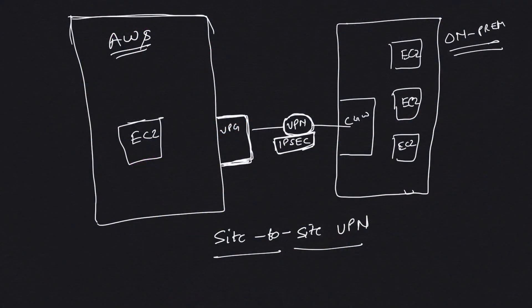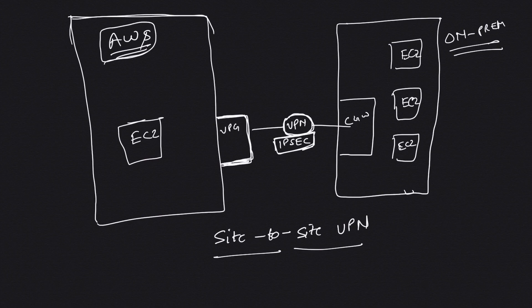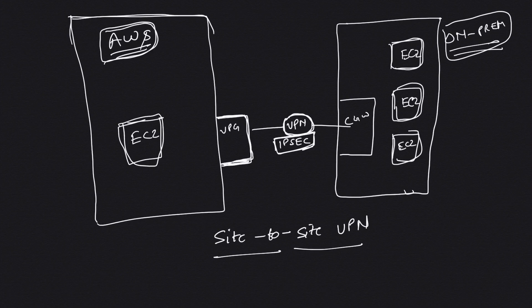Hey guys, welcome back to the channel. In this video we are going to configure and set up a site-to-site VPN between an on-prem data center and our AWS VPC. On your right you can see we have an on-prem setup running a customer gateway, and on the left we have our AWS VPC with a virtual private gateway. Customer gateway and virtual private gateway are just two anchors or two ends of a single connection, and this is what our architecture is going to look like.